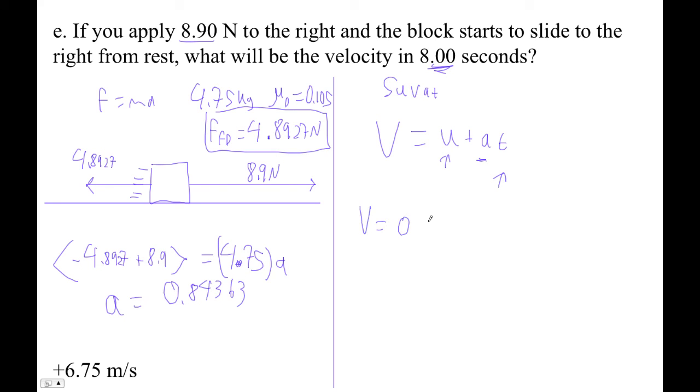So now my final velocity is 0 plus 0.84363 times 8. 6.75. Ta-da. There we go.